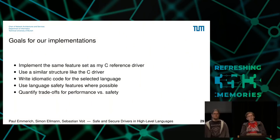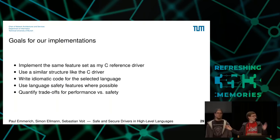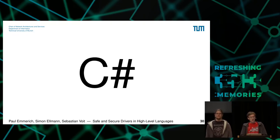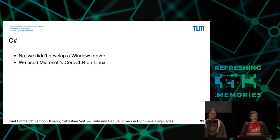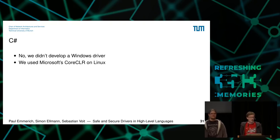I'm going to briefly cover several languages before doing a deeper look at Go and Rust. The first unusual one is C#. No, we didn't develop a driver for Windows — Microsoft's CoreCLR is available on Linux and works really well. C# is a just-in-time compiled, garbage-collected, memory-safe language with a relatively obscure unsafe mode that features full support for pointers, so you can write code that looks like C.